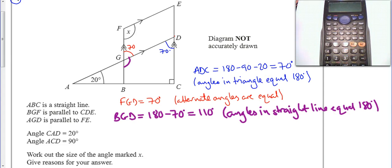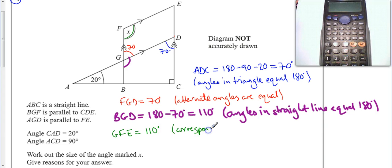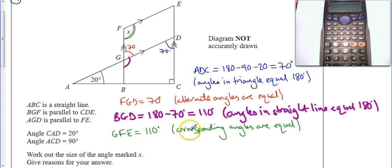Finally, if I choose green, I now know that angle GFE is also equal to 110 degrees. The reason I know this is because of corresponding angles — corresponding angles are equal. I can make an F shape here, so I know that this one and this one are the same. So the angle X is 110 degrees.